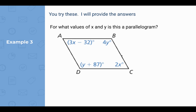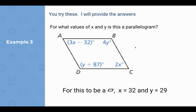For what values of x and y is this a parallelogram? x would have to equal 32 and y would have to equal 29. How did you solve that? We know that angle C would have to be congruent to angle A, so you set those two values equal to each other and solve for x. Likewise, angle B would have to be congruent to angle D, so you set those two values equal to each other and solve for y.